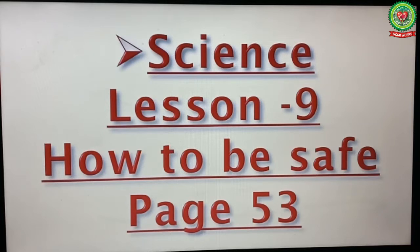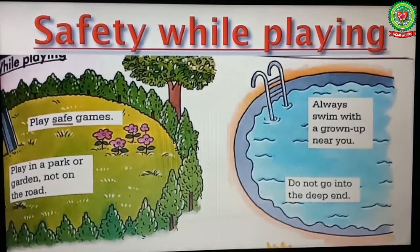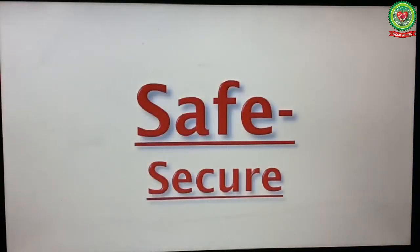In today's class we will learn safety while playing. So children, open your science book, lesson 9 — How to Be Safe, page number 53. Let's start reading: Safety While Playing. Play safe games. Underline the word 'safe' and write down its meaning: secure.